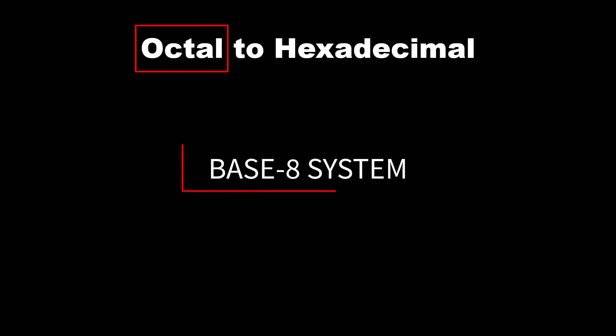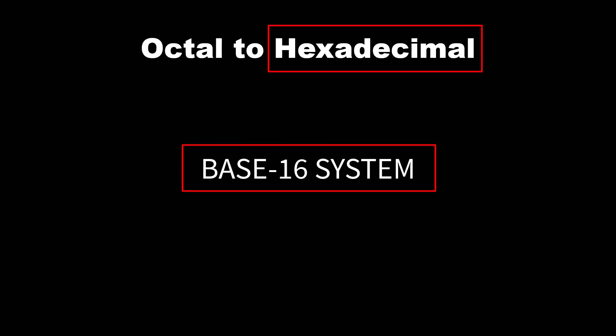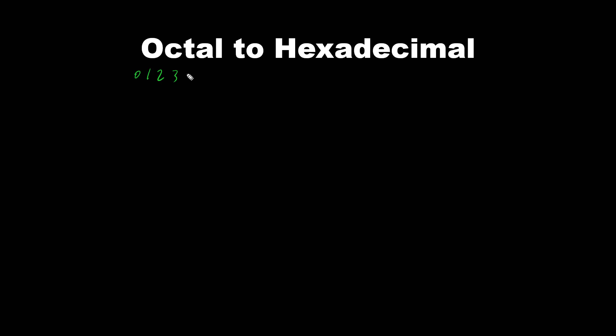As we previously talked about, octal number is a base 8 system and hexadecimal number is a base 16 system. In octal numbers we have 0, 1, 2, 3, 4, 5, 6, and 7 — a total of 8 different digits including 0.